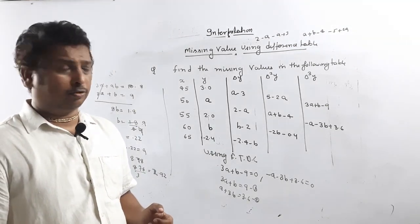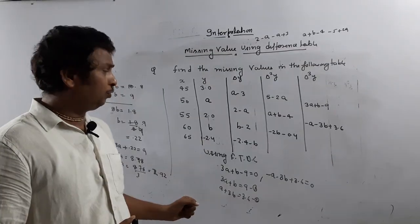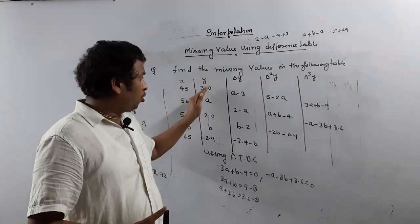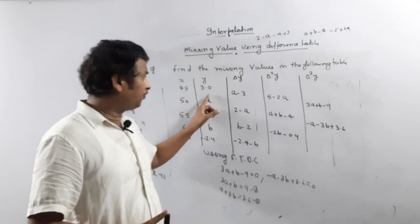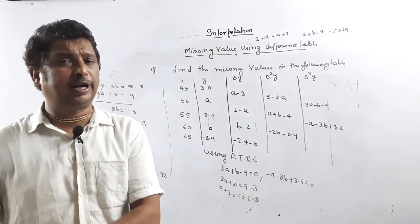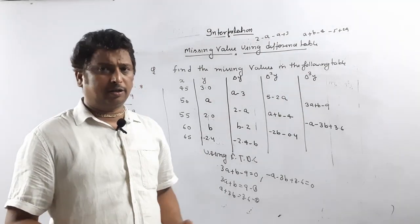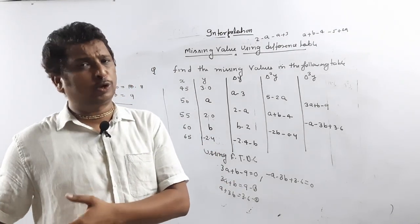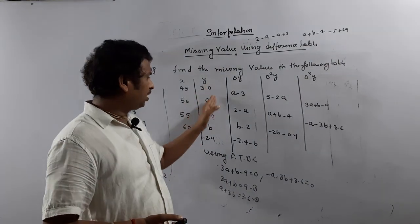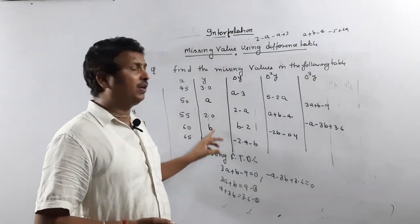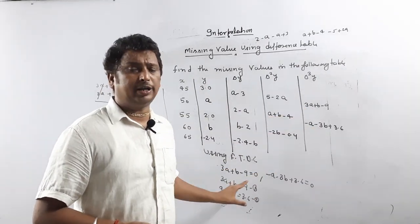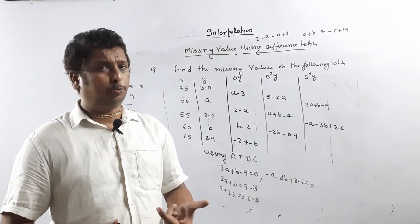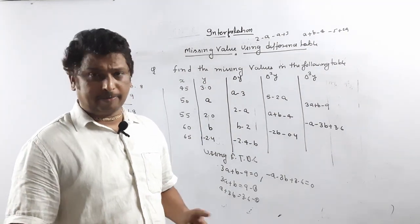Thank you and I hope you understood all of this. If you have any problem, please message me. The procedure is very simple: count how many values are given. Suppose 4 values are given — go up to 4th order, equate 4th order differences to 0, and get the required values. If only one missing value is there, when you equate to 0 you will get that value directly. Whatever values are given — if 3 values are given, go up to 3rd order, equate all 3rd order differences equal to 0, solve, and you will get the required values. Thank you, hope you understand. Please like, share, and subscribe.